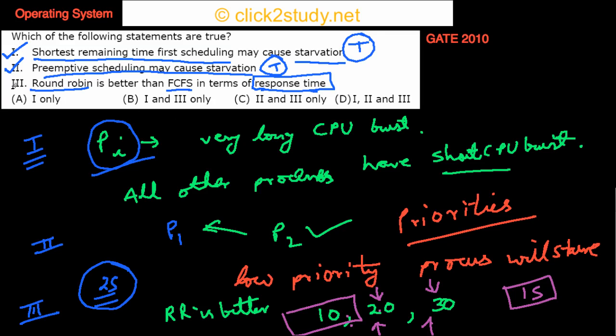So round robin is better in terms of response time — you get early responses from all your processes. This means all three statements are true, and that is option D.